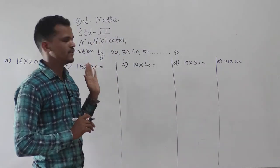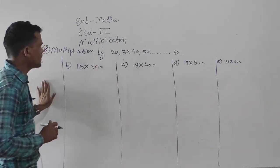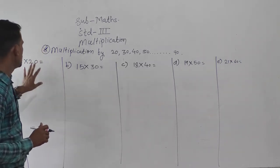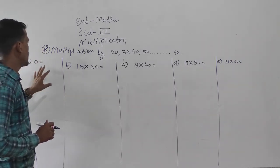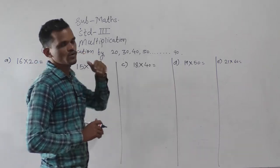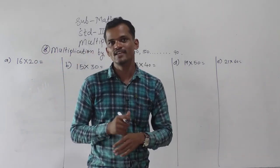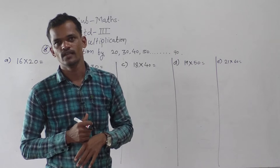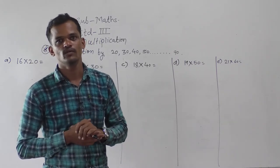So now in this video we will learn about how to multiply a number by 20, 30, 40, 50 up to 90 using tricks. Within seconds you can solve, there is no need to calculate.